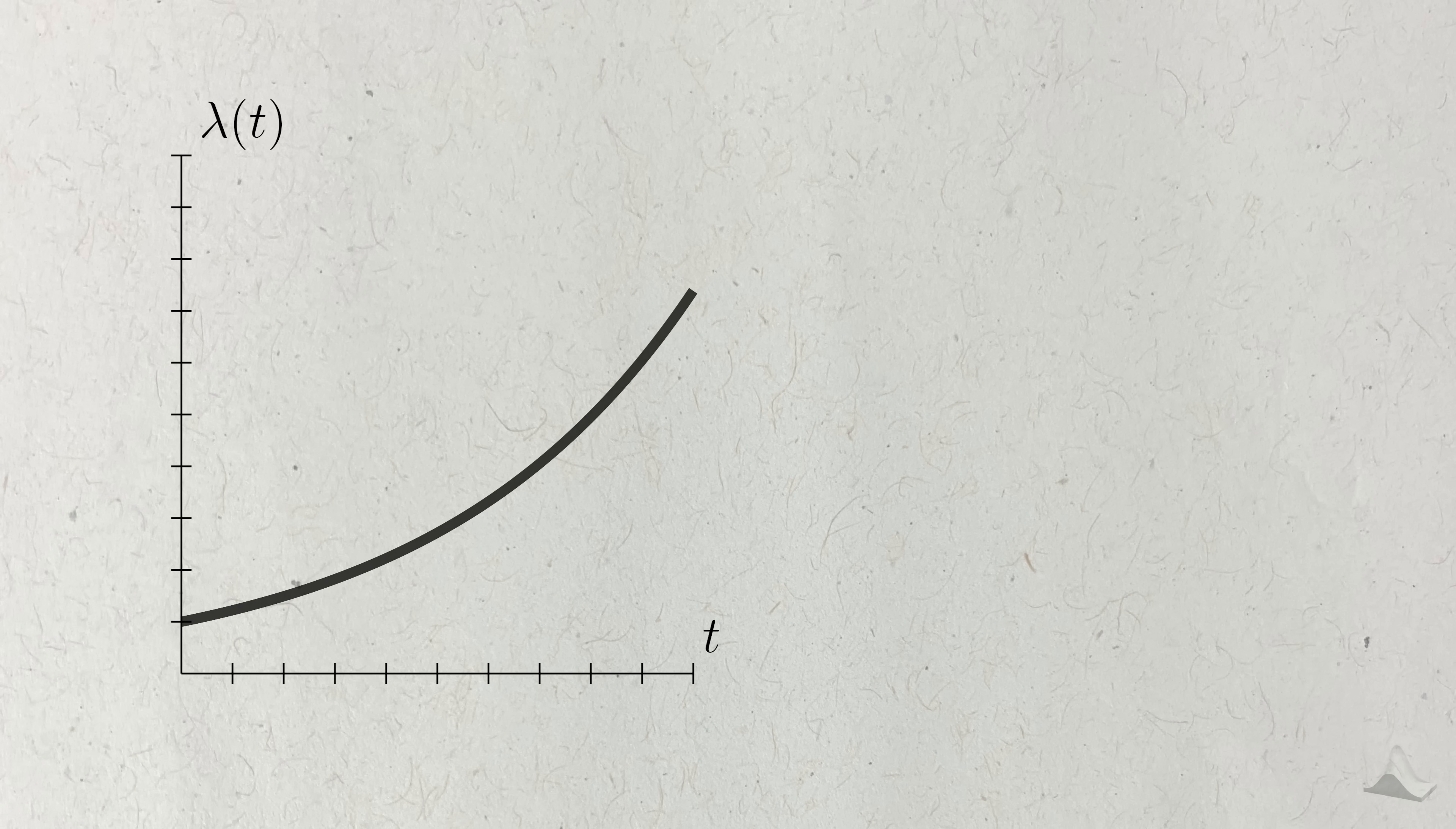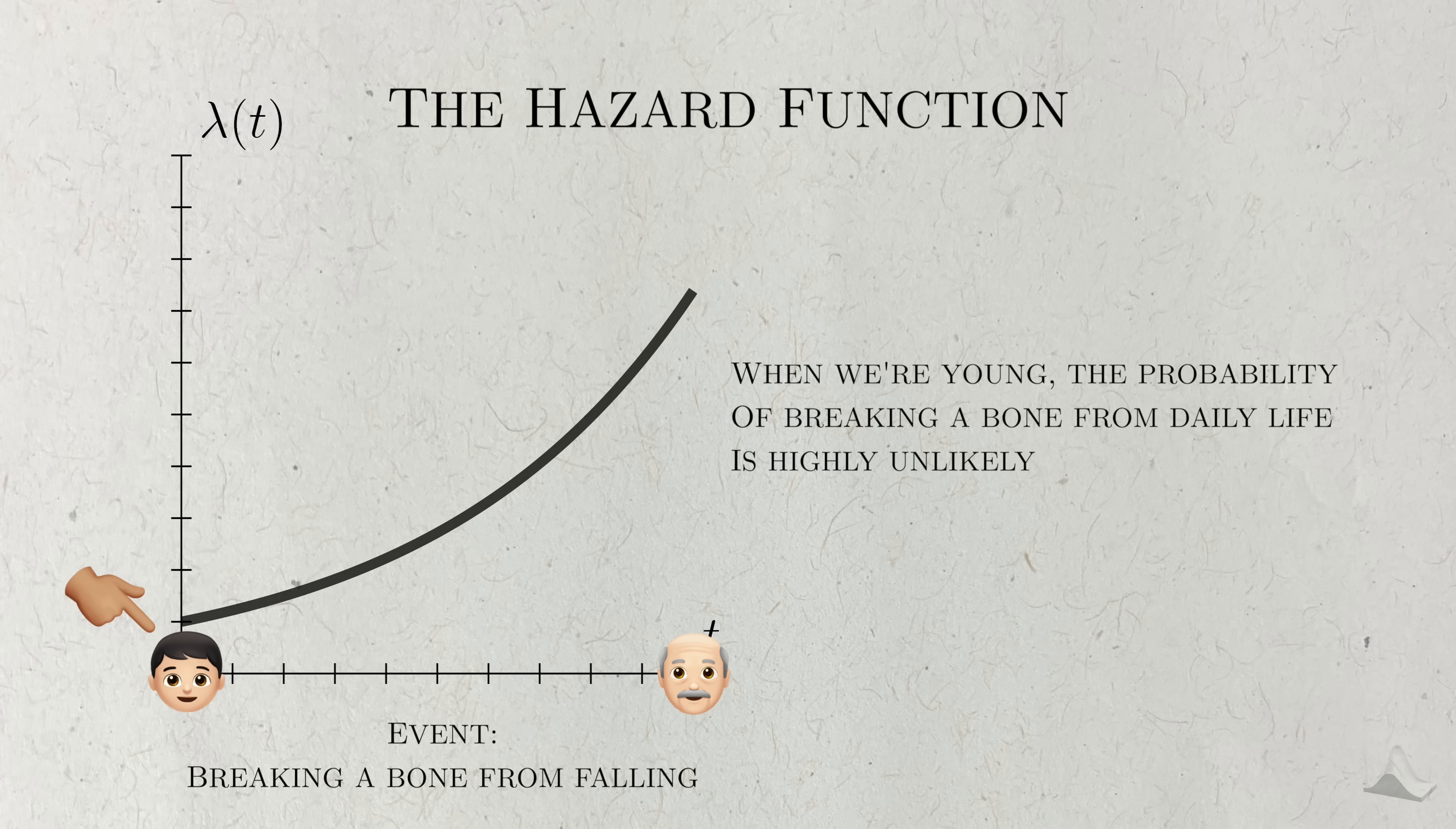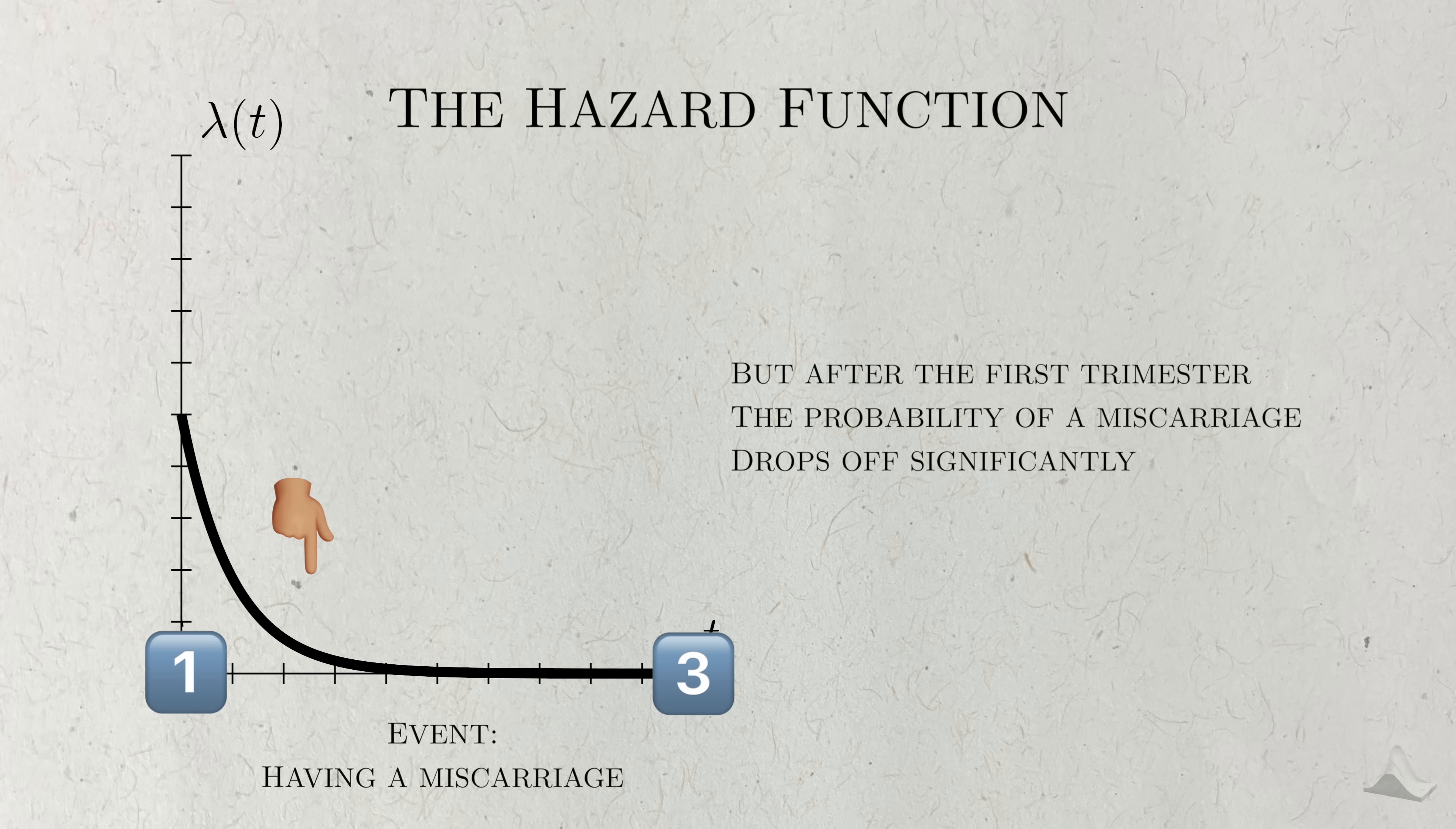If you know what the hazard is for all points in time, then you have what's called the hazard function. One of the advantages of the hazard function is that the shape alone can tell us a lot about the probability of the event over time. For example, let's say that the event is breaking a bone from falling, and that our time range is a typical human life. When we're younger, it's very unlikely that we'll break a bone just from living life. But as we get older, our bodies and skeletons become more frail. At an old enough age, bones will easily break from a simple fall. This results in an increasing hazard function. Hazard can also decrease over time as well. Events have shown that most miscarriages happen in the first trimester, due to a variety of reasons. But past the first trimester, the probability of a miscarriage gets smaller and smaller, resulting in this decreasing shape.